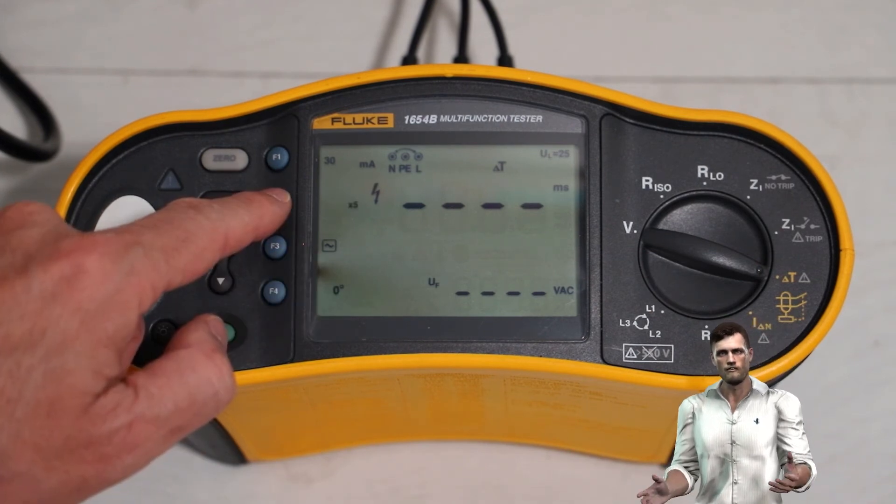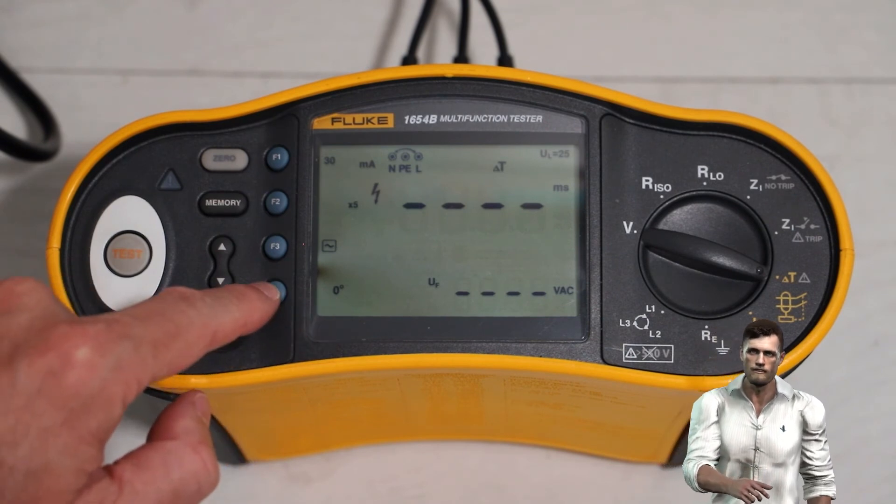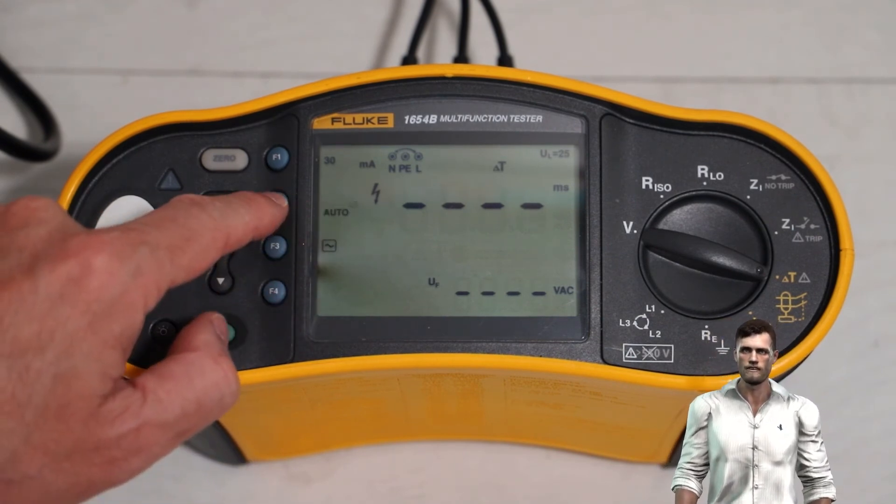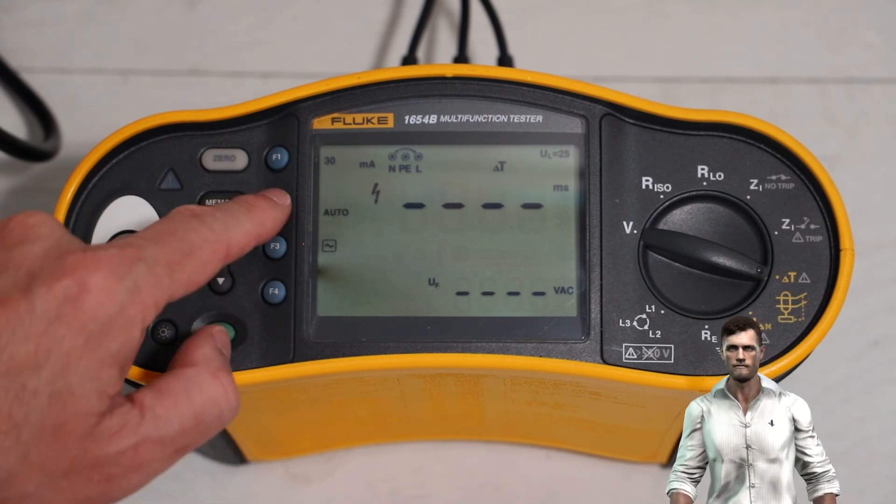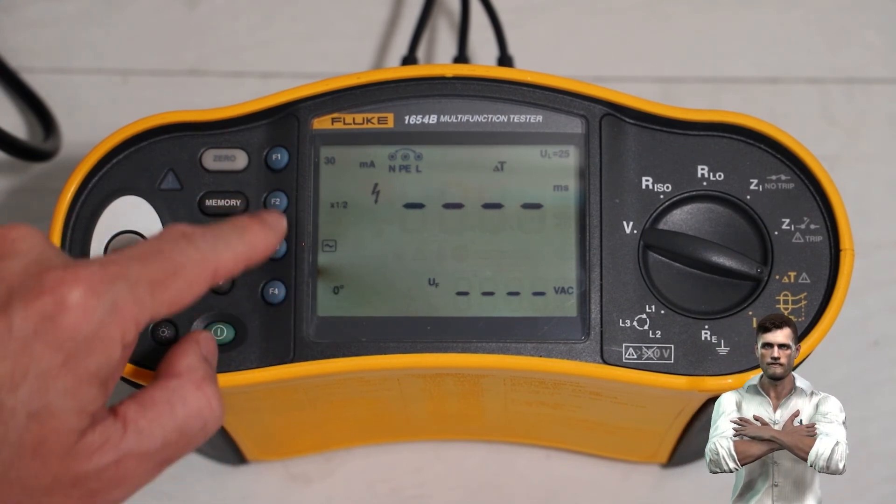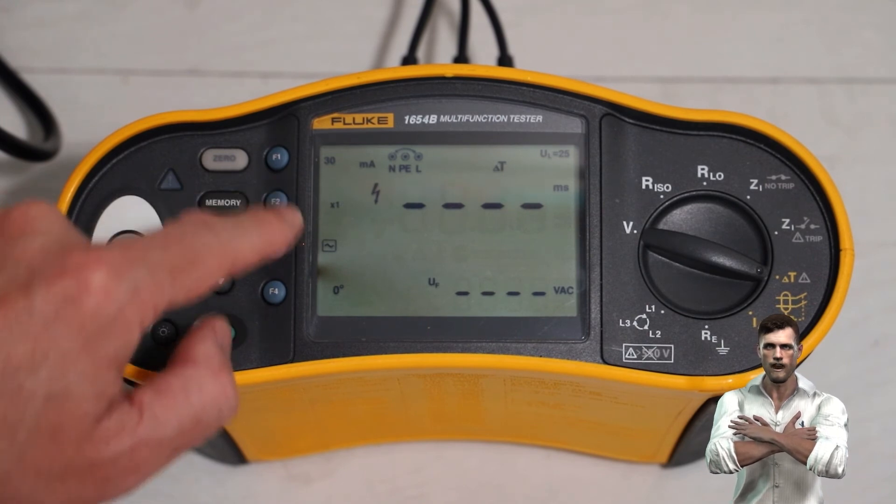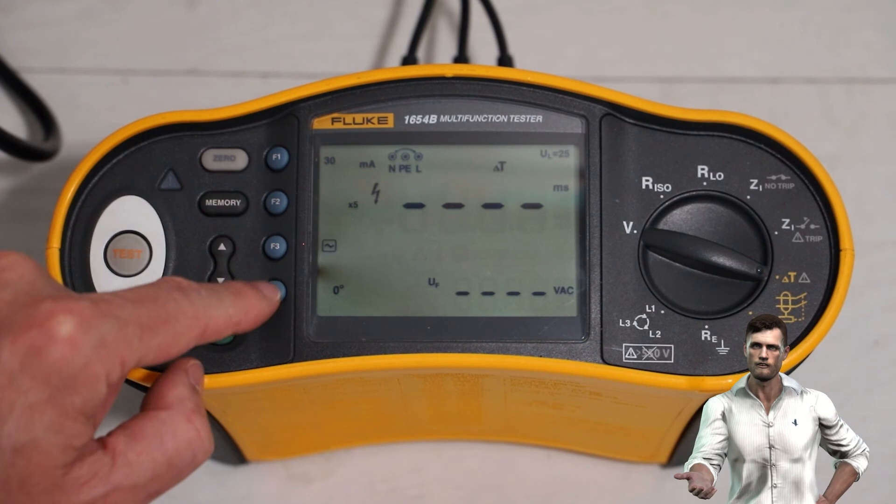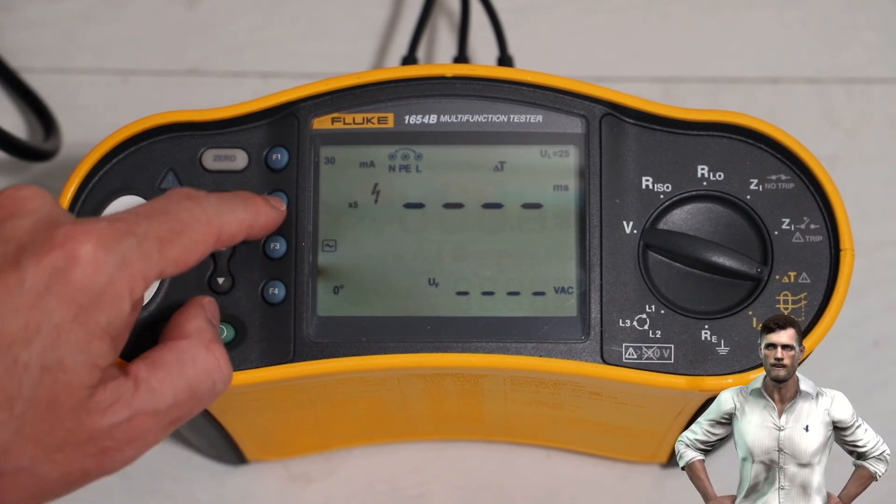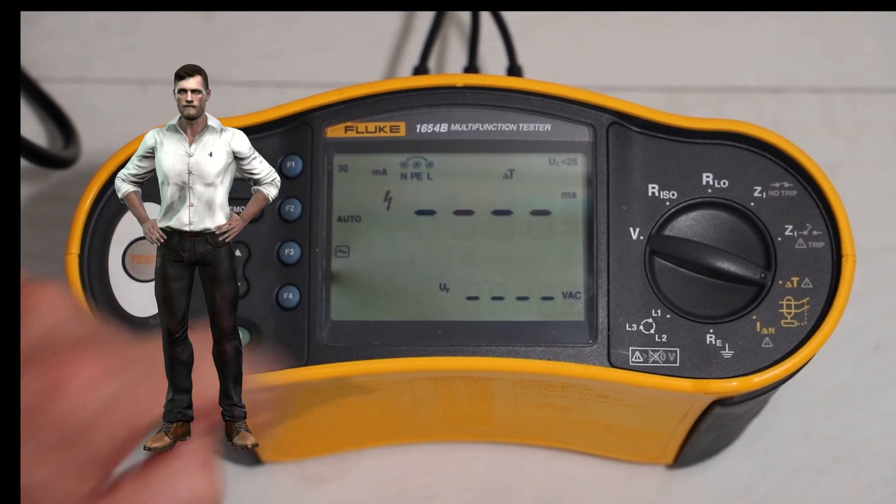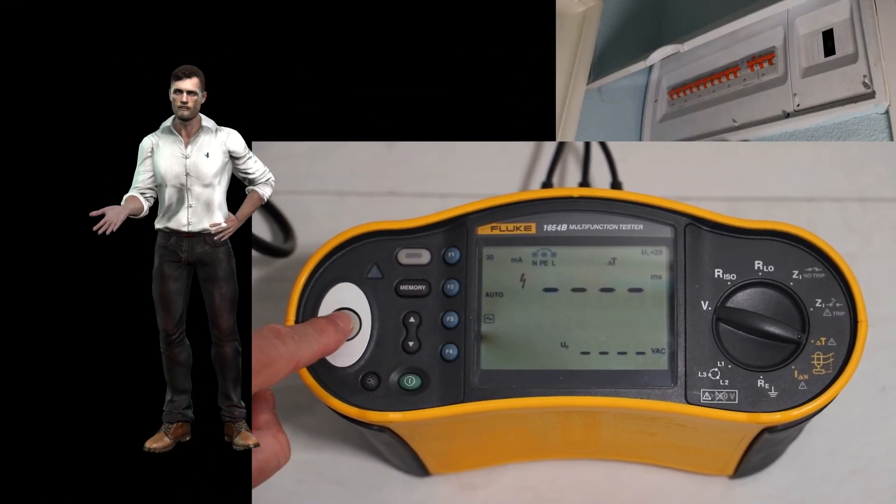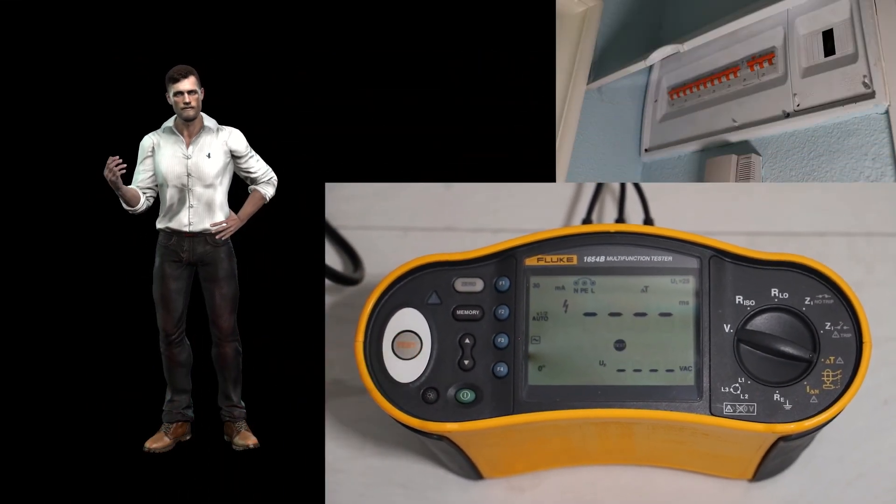Finally, with the F4 key, we could select between two options, 0 degrees or 180 degrees, in order to select if the test is done with the positive or negative cycle of the voltage waveform, but in this case, as I have selected the auto mode with the F2 key, then the instrument will perform the test sequentially with both the positive and negative cycle of the waveform. Now that we have configured the instrument, we can press the test button to start the differential protection verification process sequentially.